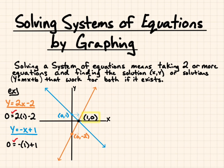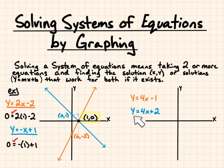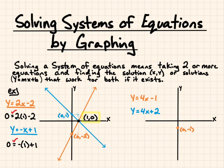This is the solution: (1, 0). Let's try another example. y equals 4x minus 1, and y equals 4x plus 2. We'll start with our first equation, y equals 4x minus 1. We go to the y-intercept at negative 1 along our y-axis, then follow the slope of 4 — so for every 1 positive in x, we go up 4 in y. And we graph that line.